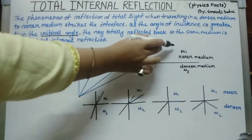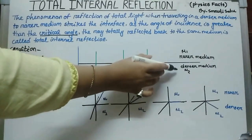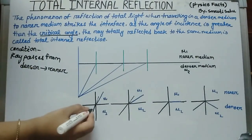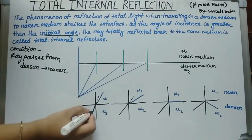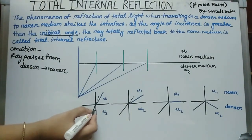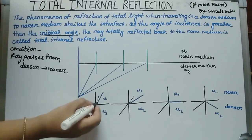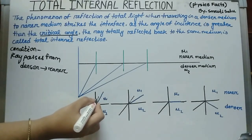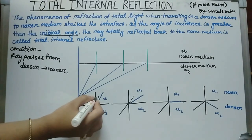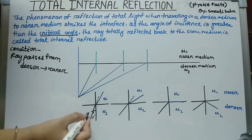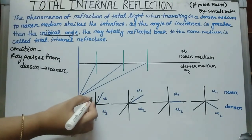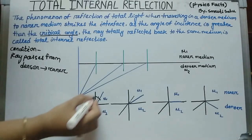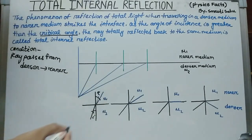Take the rarer medium as mu1 and the denser medium as mu2. As the ray passes from denser to rarer medium, this is the angle of incidence, and the light deviates — the ray deviates from its actual position. As the ray passes from denser to rarer medium, it goes away from the normal. This is the angle of refraction.